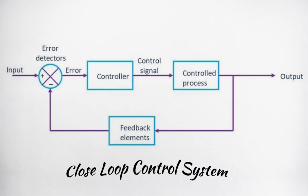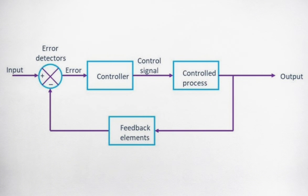The error signal is then sent to the controller to reduce the error and get the desired output. A feedback loop is an essential component of a closed-loop controller. This loop assures that the controller will always perform a control action to keep a process variable at the same value as the setpoint.